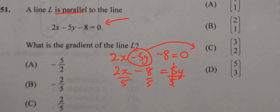So this gives me y. Now I have y equals 2 over 5x minus 8 over 5. Now it's in the form y equals mx plus c, and the number before x is my gradient.